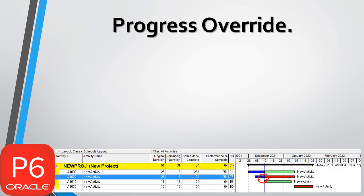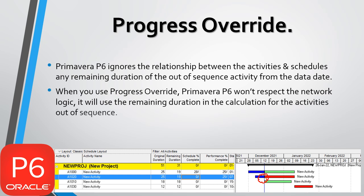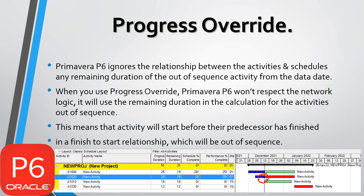Progress Override: Primavera P6 ignores the relationship between the activities and schedules the remaining duration of the out-of-sequence activity from the data date. When you use Progress Override, Primavera P6 won't respect the network logic — it will use the remaining duration in the calculation for activities out of sequence. This means that an activity will start before its predecessor has finished in a finish-to-start relationship, which will be out of sequence.